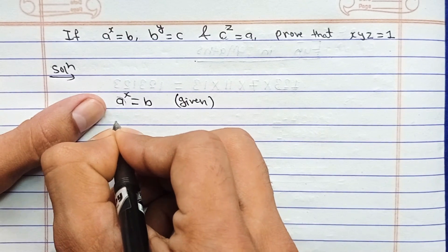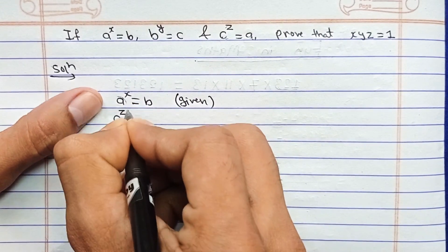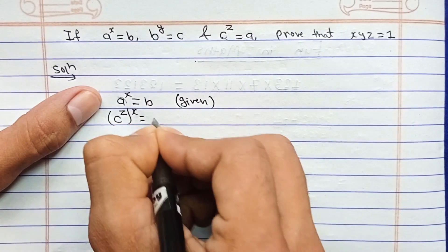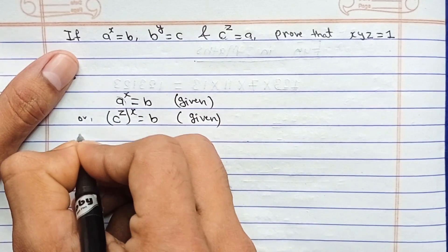It means replace the a by c to the power z, but we already have power here. x equals to b, this is also given.